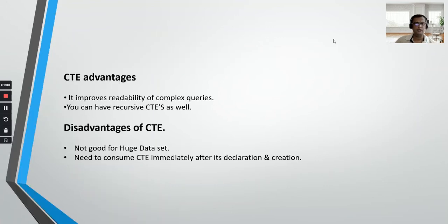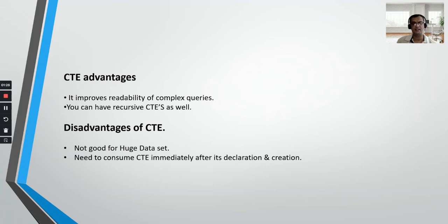What are the advantages of CTE? Basically it improves readability of complex queries. If you want to store a result set somewhere — a complex query result set — you can do that so that you do not have to include that complex query into the main query. You can also have a recursive CTE, which is nothing but a CTE referencing back to itself. The common scenario where you can use recursive CTE is to find the hierarchy of any data.